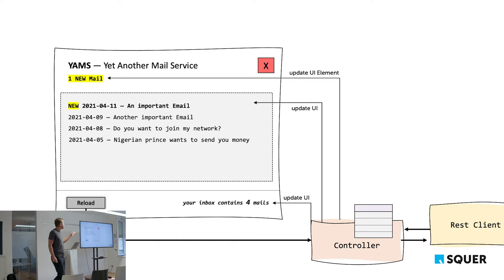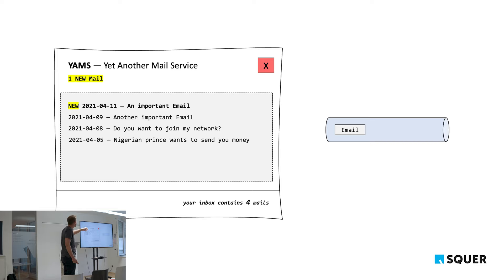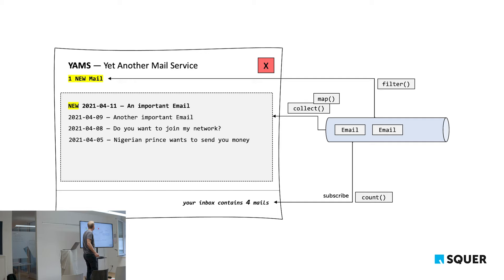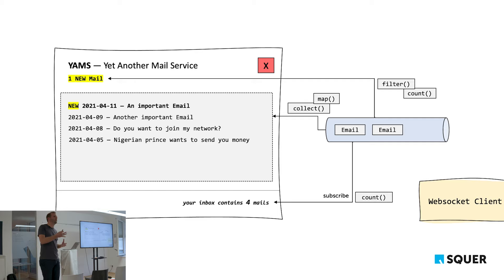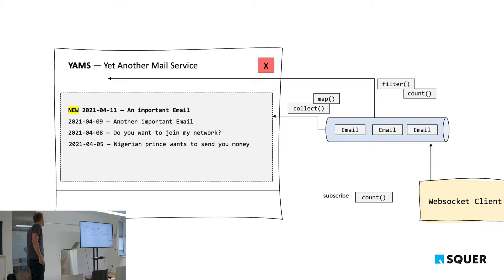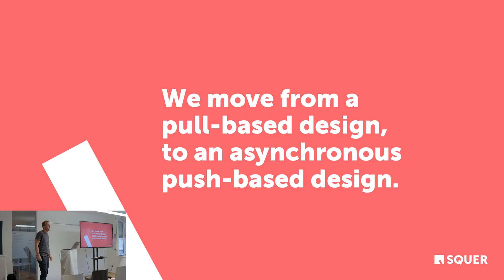With a stream containing emails, you no longer need a reload button. You do simple stream transformations: subscribe to count emails, subscribe and collect them, subscribe and filter for new emails then count them. Instead of a REST client in a pull direction, you'd use a WebSocket client that pushes new emails to the stream — when the stream changes, everything subscribed automatically updates. We move from a pull-based design to an asynchronous push-based design.